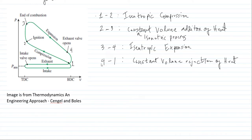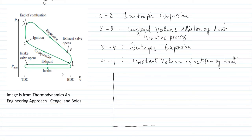These four processes form what we call the Otto cycle. We will simplify this to a four-process event completing one cycle. So again, point 1 to point 2 is isentropic compression.